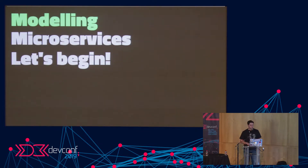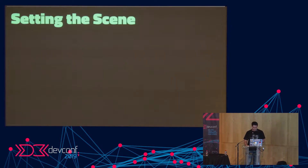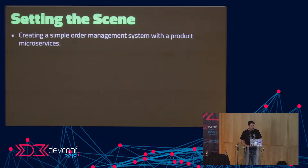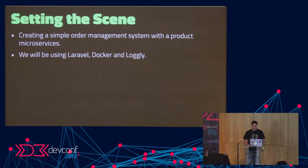So we've looked at what microservices are and their advantages and cons — now let's look at how we would model them. To set the scene: we're going to create a very simple order management system with a products microservice, just creating our first microservice. We're going to be using Laravel, Docker, and Logly, which is for distributed logging.